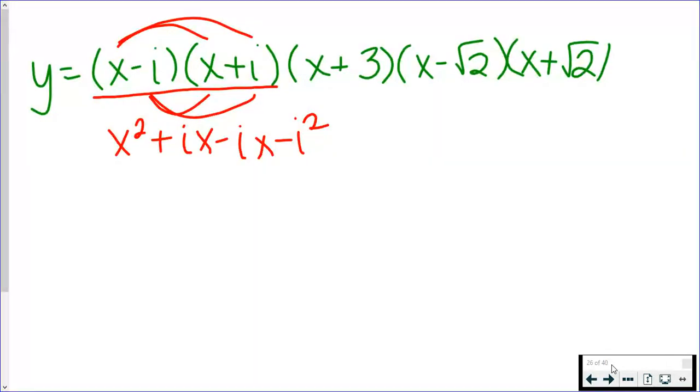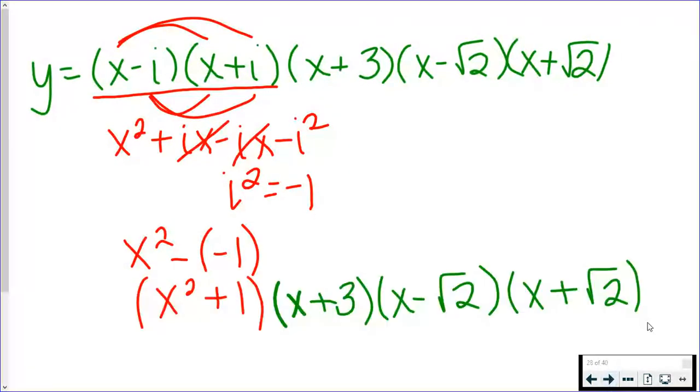Those are going to go away. That's why I like to start by distributing those two factors together. Now I've got this -i² on the end. Please don't forget that i² is equal to -1. So when you replace i² with -1, this becomes x² minus -1. That means we get x²+1, and I just brought down my other factors, x+3 and the x plus or minus √2s.